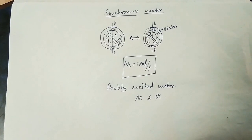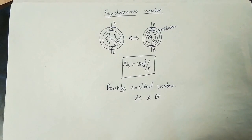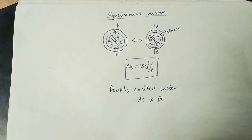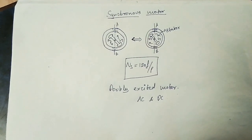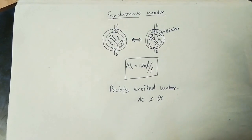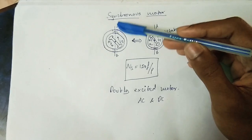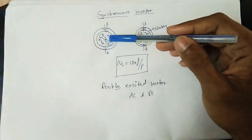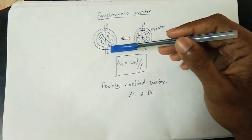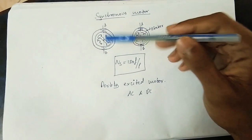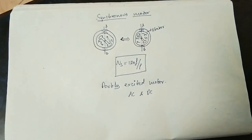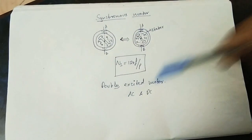If you use AC supply, there is an alternating magnetic field. If you use DC supply, it is a doubly-excited motor. So the synchronous motor uses both AC and DC supply.